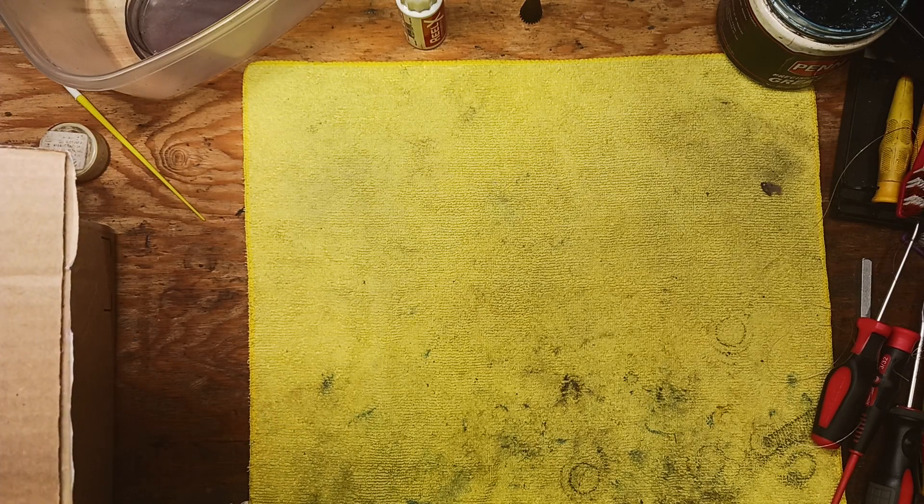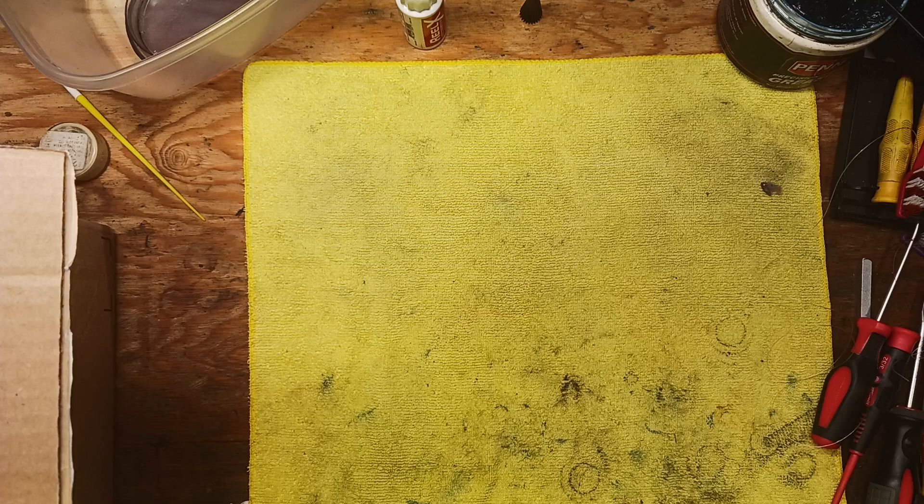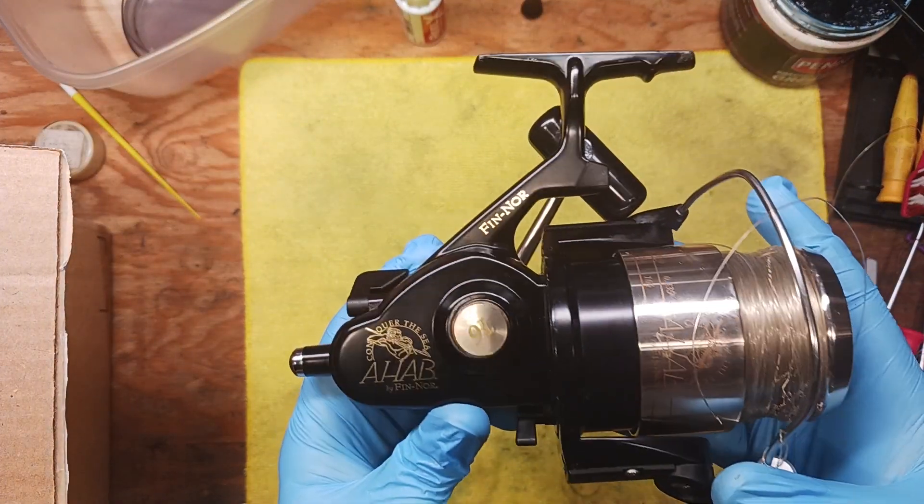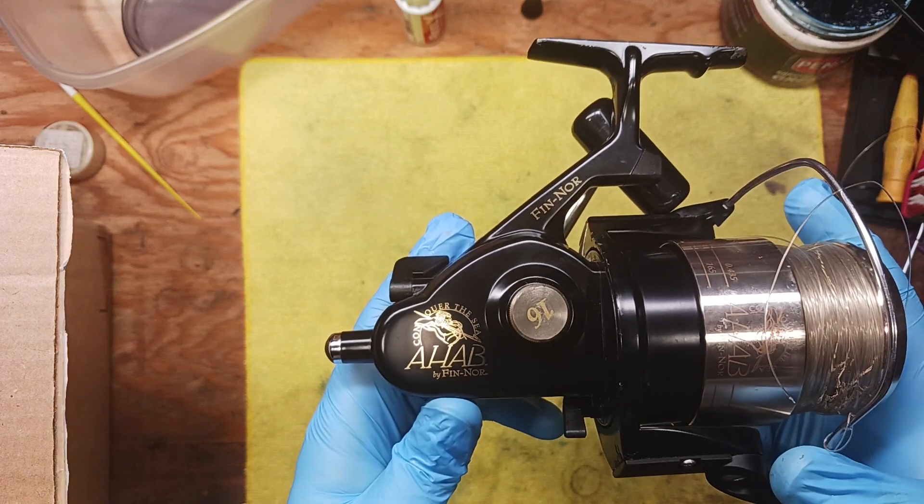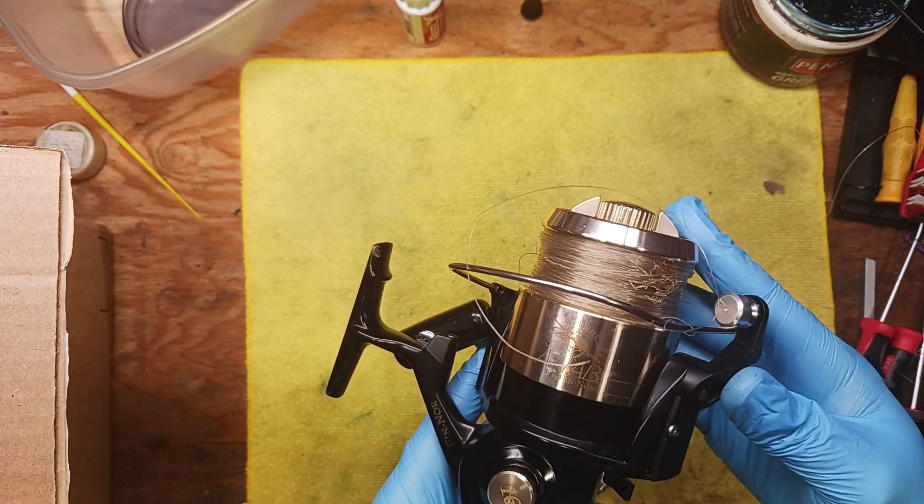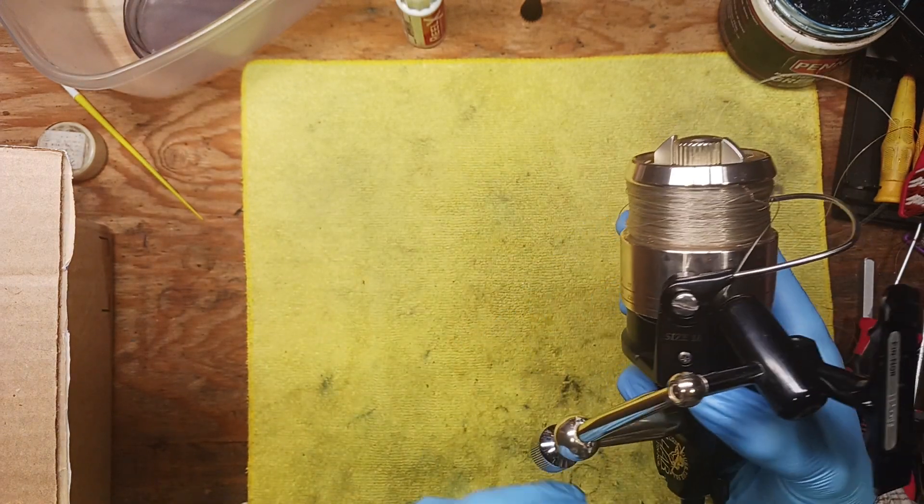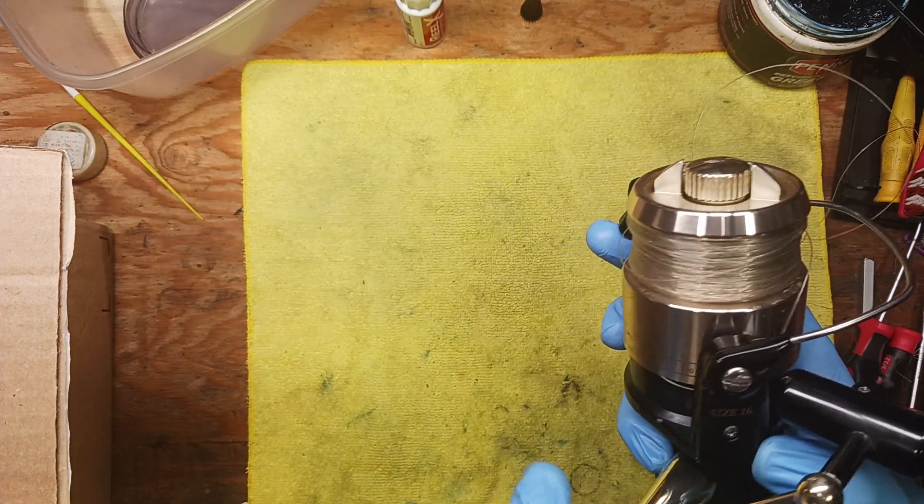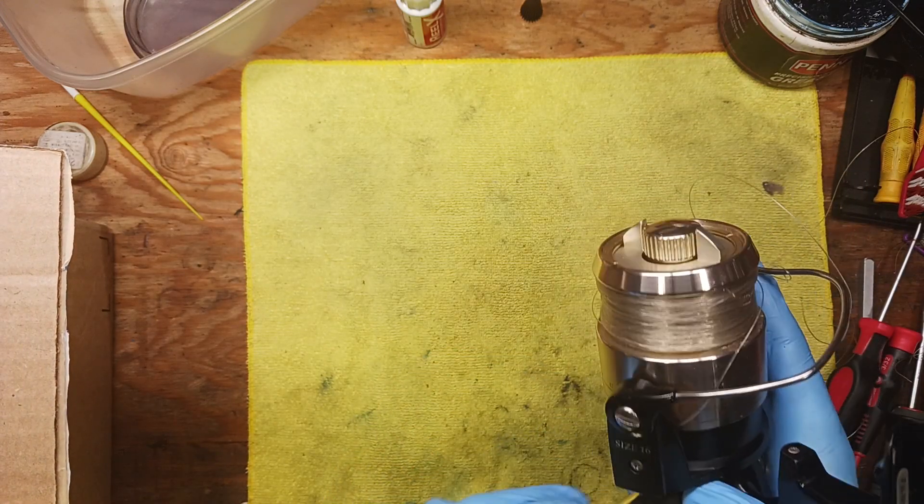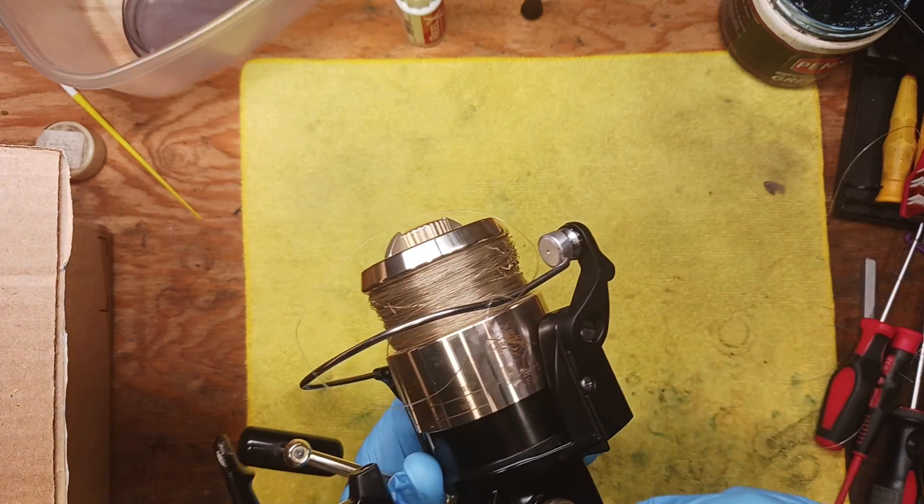Last but not least, we've got a somewhat rare model, rare find. We're looking at a Fin-Nor Ahab, a size 16, beautiful saltwater reel.